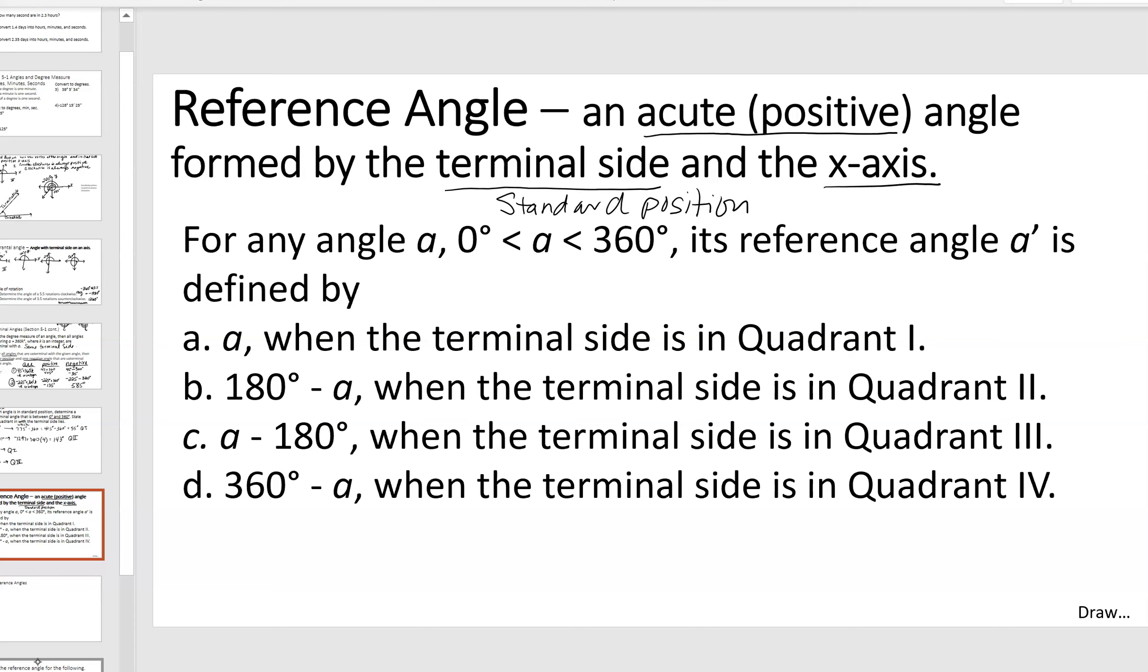So, ultimately, these have, we have four different cases. We've got four quadrants, so we've got four different cases. Your terminal side is going to land somewhere between zero and 360 degrees. And if it's a quadrantal angle, then it does not have a reference angle because quadrantal angles are special.